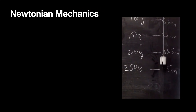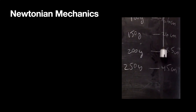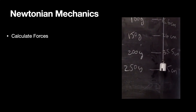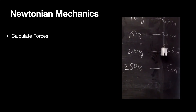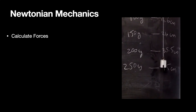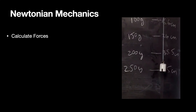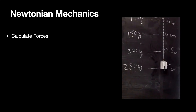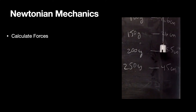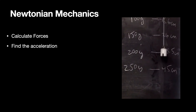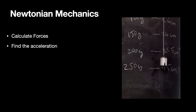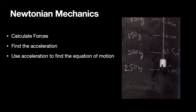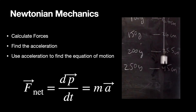Newtonian mechanics can be used to solve problems like this oscillating mass on a spring. For this mass, I can calculate the forces at every instant in time — the gravitational force pulling down and the spring force pulling up. The spring force is not constant, but I can still calculate it. Once I calculate the forces, I can find the acceleration using the normal ideas of Newtonian physics, and then integrate to find the equation of motion.